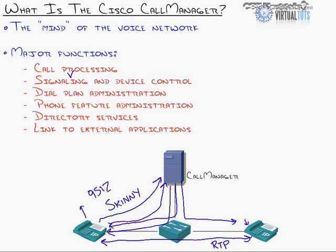The call manager doesn't process the actual voice traffic. The more phone calls happening on the network, the more bogged down the call manager would get if it did. Also, if a hundred phone calls are active and the call manager dies or freezes, you'd lose all of them. Thankfully, the call manager can die during communication and all the phones will talk as if nothing happened, if your network is configured correctly, because RTP is just going between the end devices.